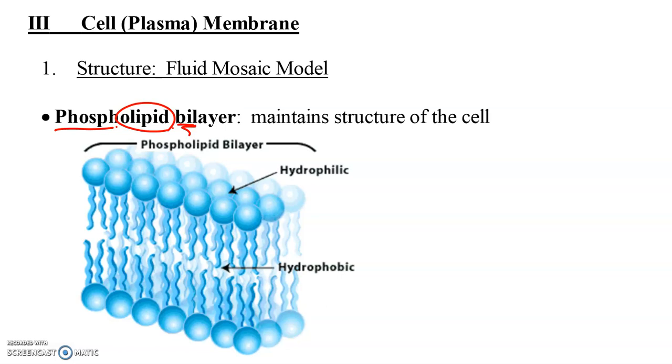Now let's look at the components. These circles are representing what we call the phosphate heads, and they are hydrophilic. Hydro means water, and philic means loving.